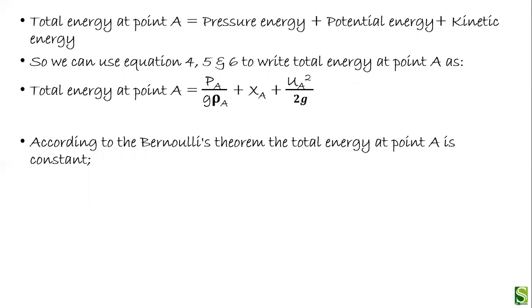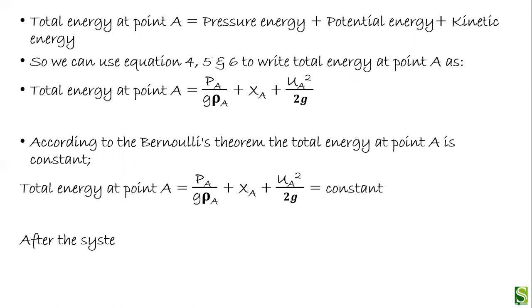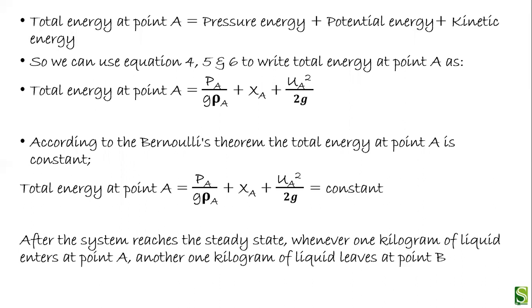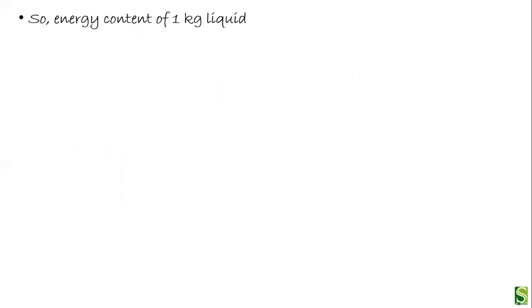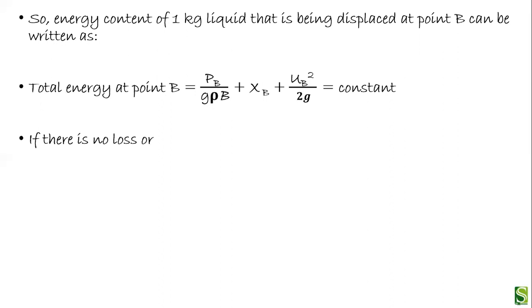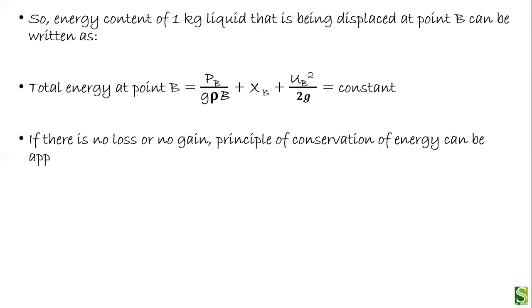According to Bernoulli's theorem, the total energy at point A is constant. After the system reaches steady state, whenever one kilogram of liquid enters at point A, another one kilogram of liquid is leaving at point B. The energy content of one kilogram of liquid leaving at point B is: total energy at point B equals P_B over (g × rho_B) plus x_B plus mu_B squared over 2g.